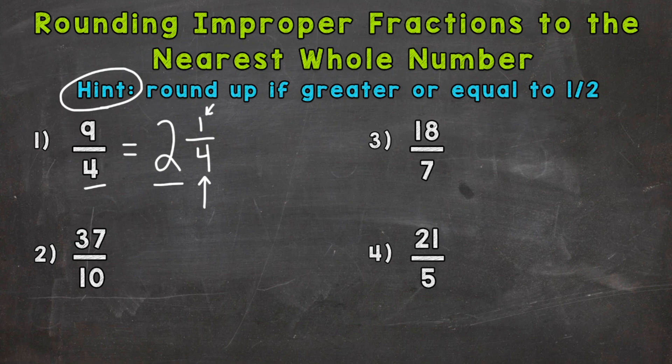Therefore, we stay the same as far as this whole number goes. So 2 and 1 fourth rounds to 2. Now this symbol here stands for close to or approximately, and we can use it when rounding. It's helpful when rounding because we don't want to use an equal sign because 2 and 1 fourth is not equal to 2. It's close to or rounds to 2.